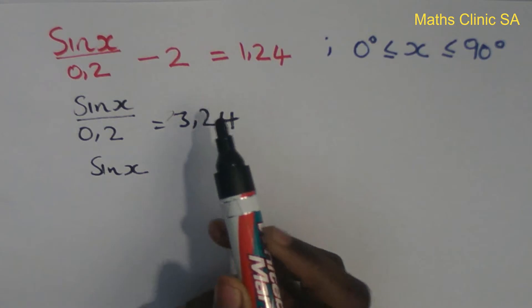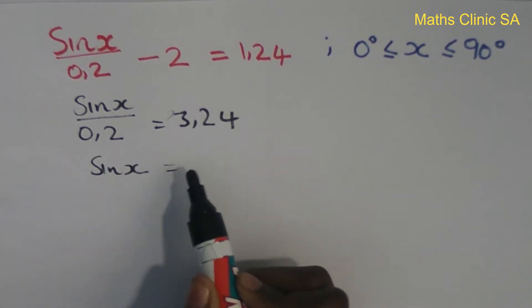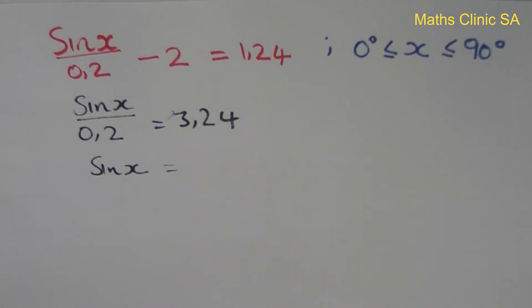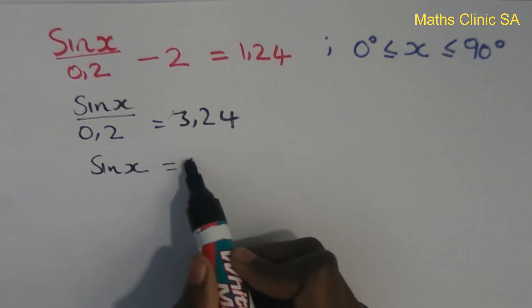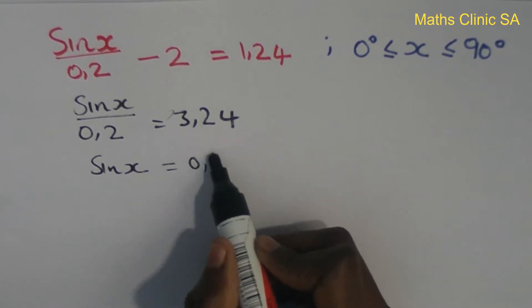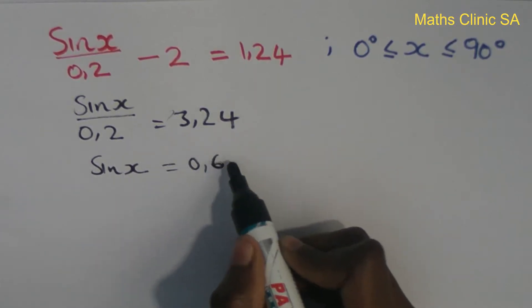So sine of x equals 3.24 times 0.2, which equals 0.648.